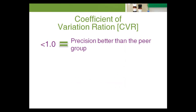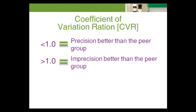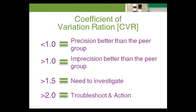Any ratio less than 1 indicates that precision is better than the peer group. Any score greater than 1 indicates that imprecision is larger. Ratios greater than 1.5 indicate a need to investigate the cause of imprecision, and any ratio of 2 or greater usually indicates a need for troubleshooting and corrective action. Something in the test system is causing the increased imprecision, and patient test results may not be entirely reliable. Certainly repeated tests such as glucose for diabetic patients, or prothrombin times for patients taking Coumadin, will not be reliable when the imprecision is high.